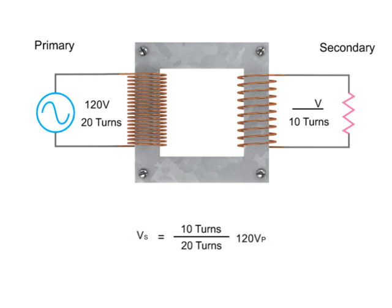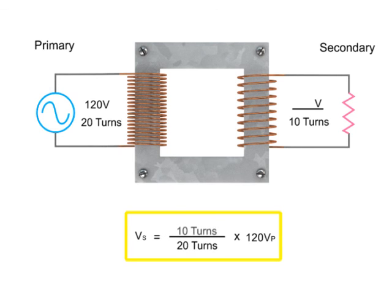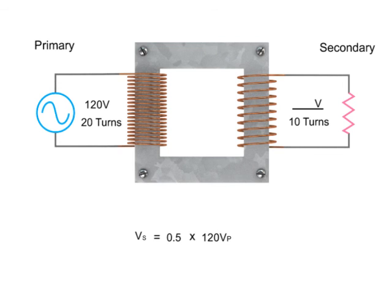Rearranging the formula and then dividing 10 turns by 20 turns, we get 0.5 multiplied by 120V. This results in a calculated step down voltage of 60 volts.